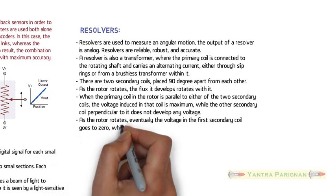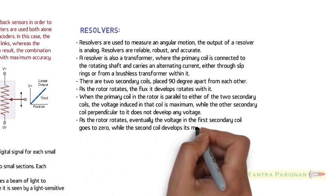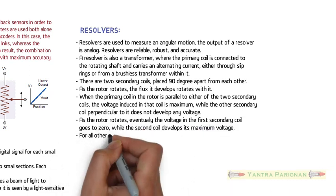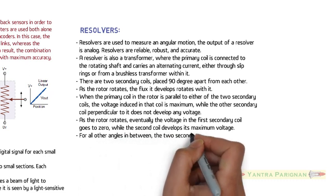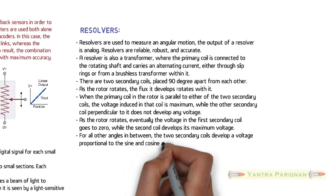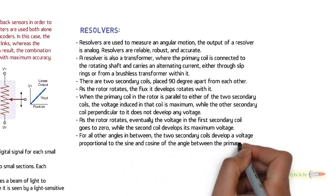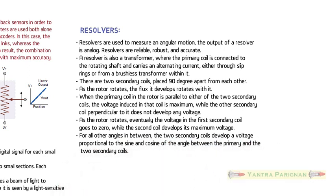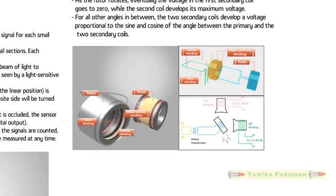As the rotor rotates, eventually the voltage in the first secondary coil goes to zero, while the second coil develops its maximum voltage. For all other angles in between, the two secondary coils develop a voltage proportional to the sine and cosine of the angle between the primary and the two secondary coils. The figure shows the basic working principle of a resolver which is used to measure angular motion.